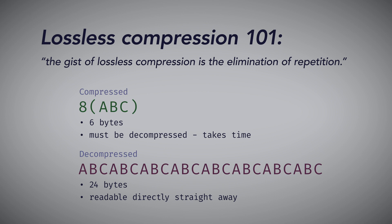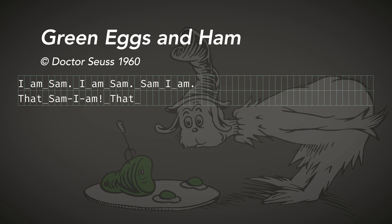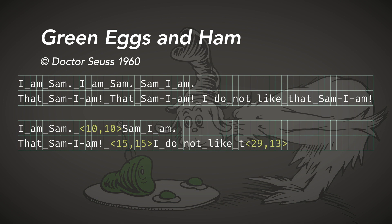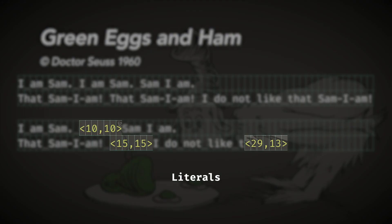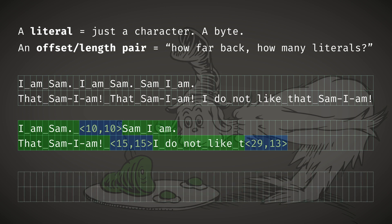Another classic example used when talking about data compression is this excerpt from Green Eggs and Ham by Dr. Seuss. There's repetition, but it might not immediately be obvious how to pack it in the most efficient way. The two things to gather here are the literals and the offset/length pairs. A literal is just a character, a byte. An offset/length pair is a command that explicitly tells you how far back to travel in the output stream and how many literals you should copy.